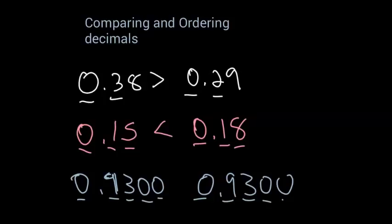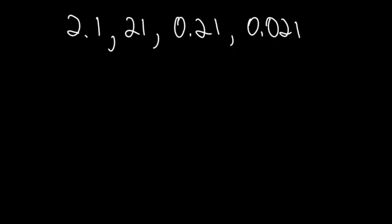So we keep comparing: zero, zeros the same, zero, zeros the same. So these ones are actually equal. The other thing, if you didn't want to add those zeros to the second number, you could have just taken them off the first one. Ninety-three hundredths is the same as ninety-three hundredths.